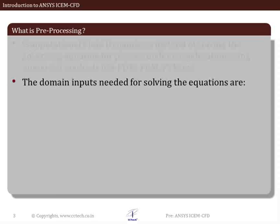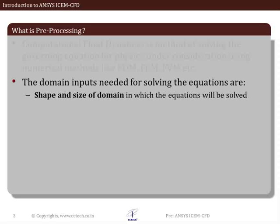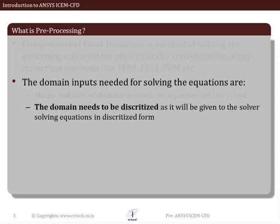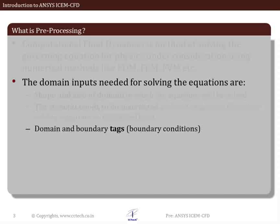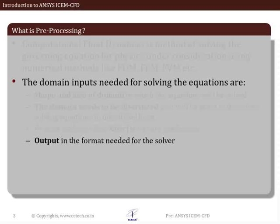As the equations are written and solved in discretized form, the domain or the geometry in which the equations are going to be solved also needs to be discretized. To facilitate the solution of governing equations using numerical methods, we need to give the following domain inputs to the solver: the first input is the shape and size of the domain, which defines the region in which the equations will be solved. We then need to discretize the domain. To identify the domain boundaries during solver setup, we need to give appropriate boundary tagging, also called setting up boundary conditions. The mesh with all this information then needs to be written in a file format understood by the selected solver.